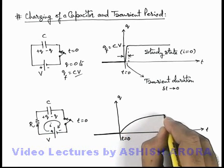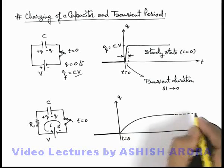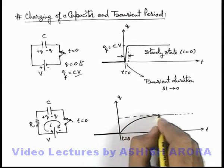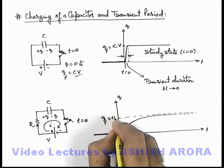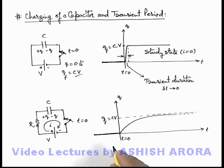The curve goes on like this, and after a long duration, finally the curve will become asymptotic at a value of final charge CV. Gradually it will become equal to CV.